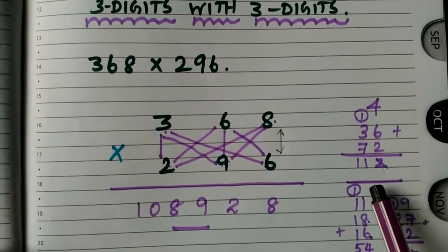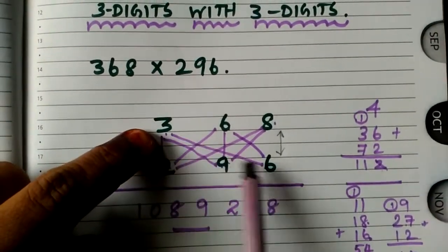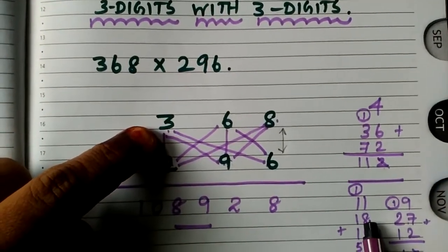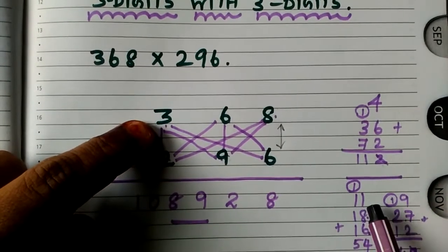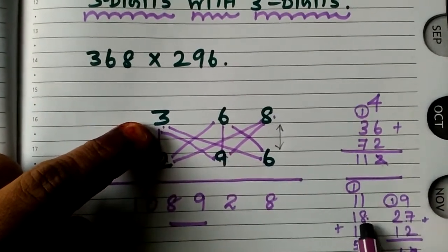The next part, what do you want to do? This one. 3 times 6 is 18. 11 will be the carryover. 3 times 6 is 18.